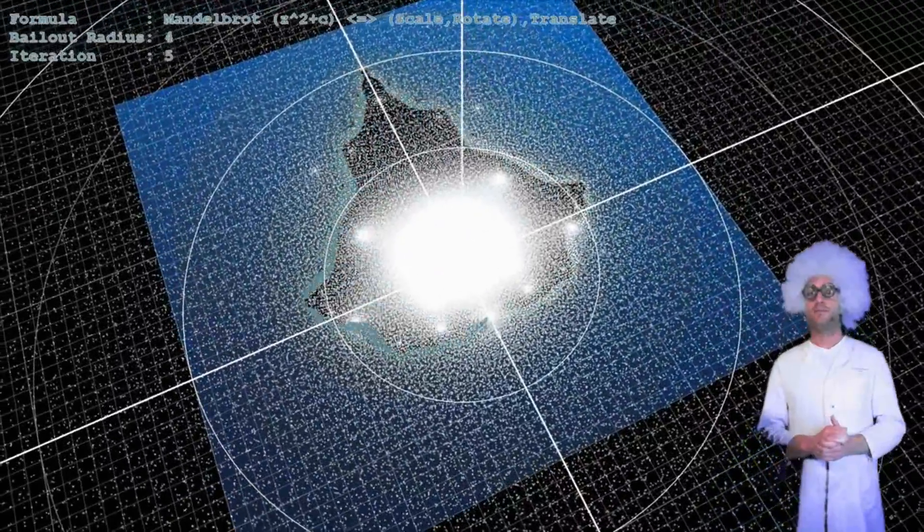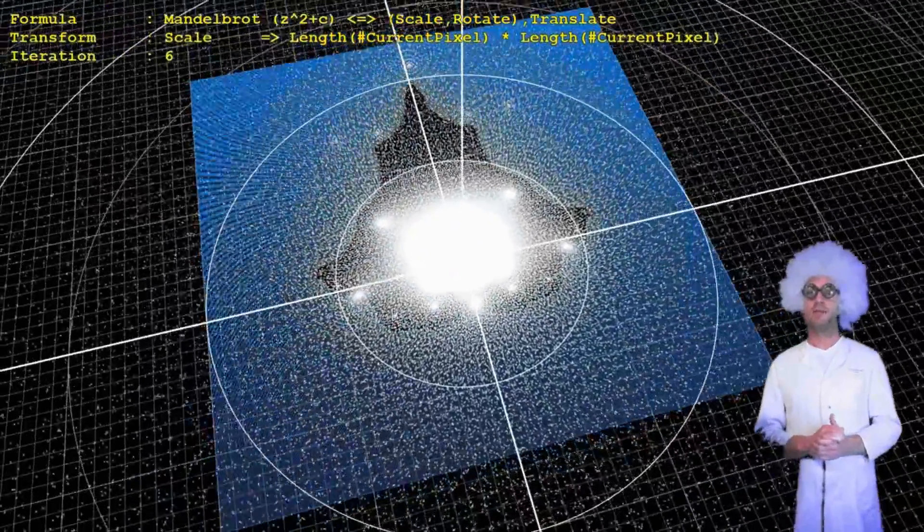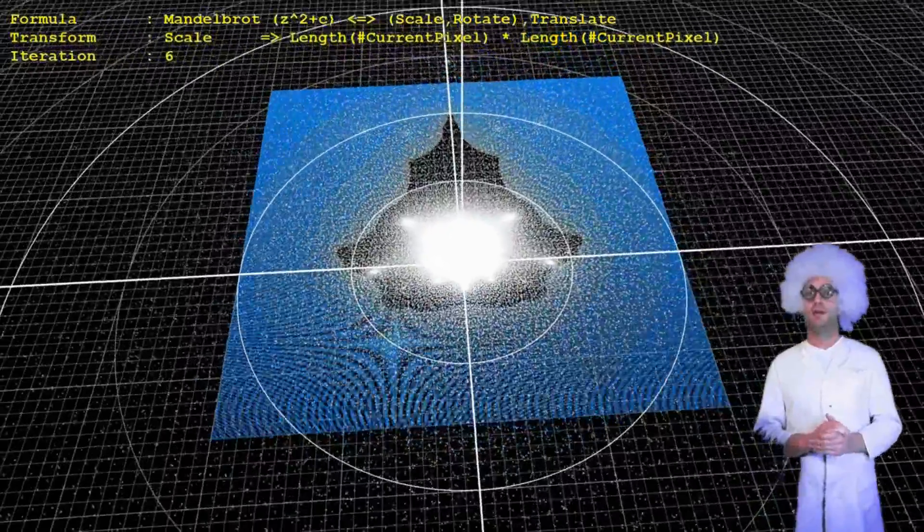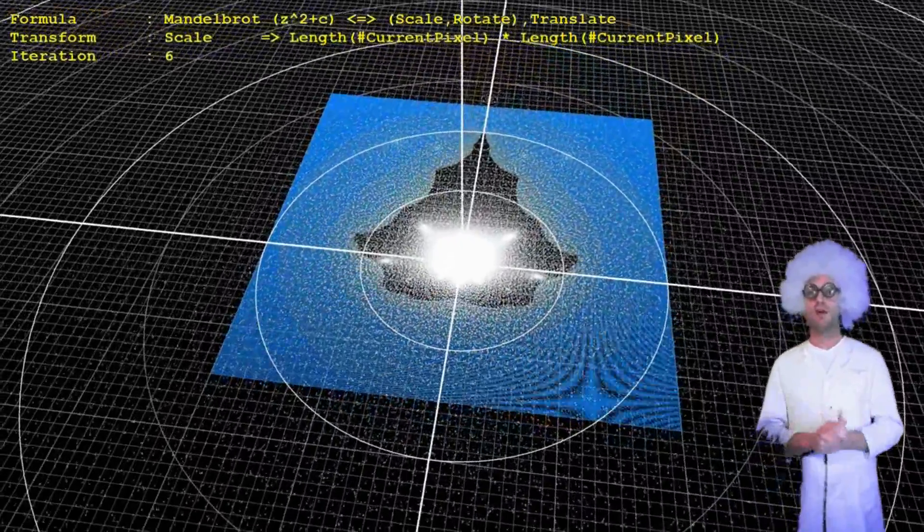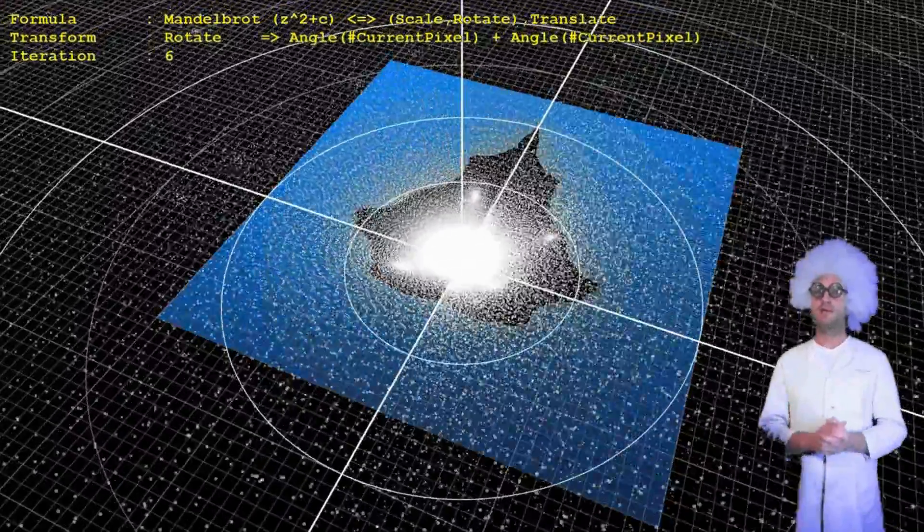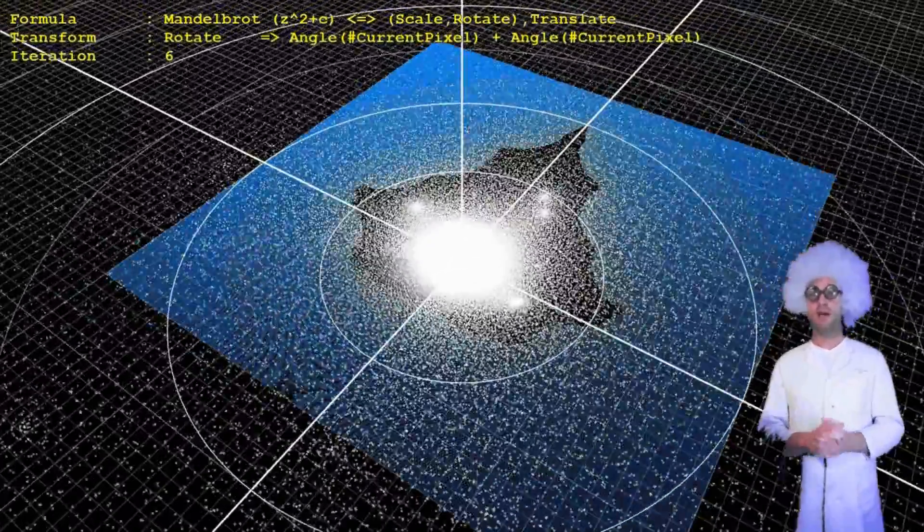The complex squaring doubles the angles. This has the effect that points on the positive x-axis do not move at all, and points on the negative x-axis rotate by 180 degrees.